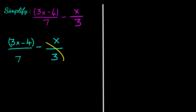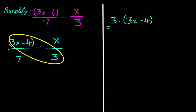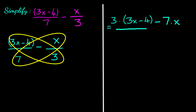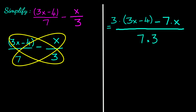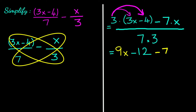Let's multiply 3 with (3x minus 4), then subtract 7 multiplied by x, the whole divided by the product of both denominators. We have 7 times 3 equals 21. 3 times 3x is 9x, and 3 times negative 4 is negative 12. Then minus 7x, all divided by 21.